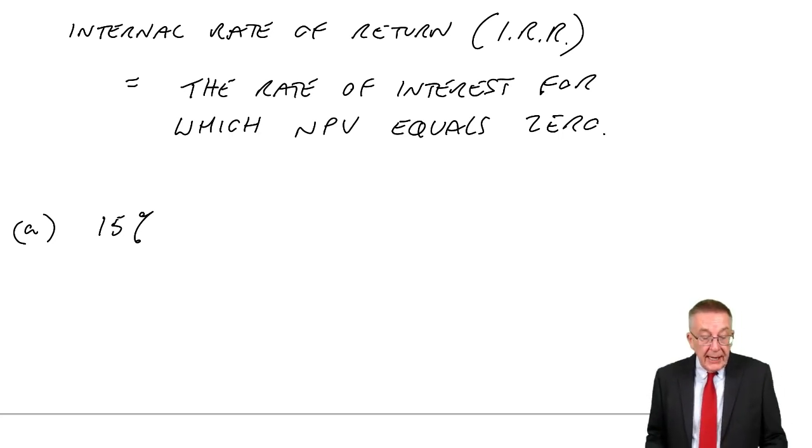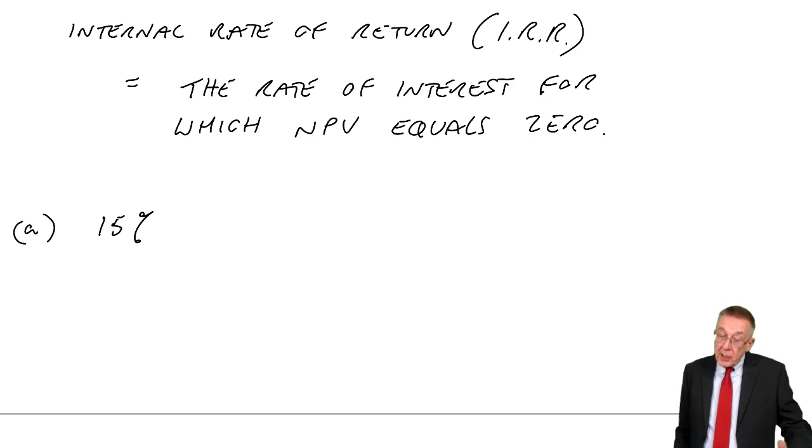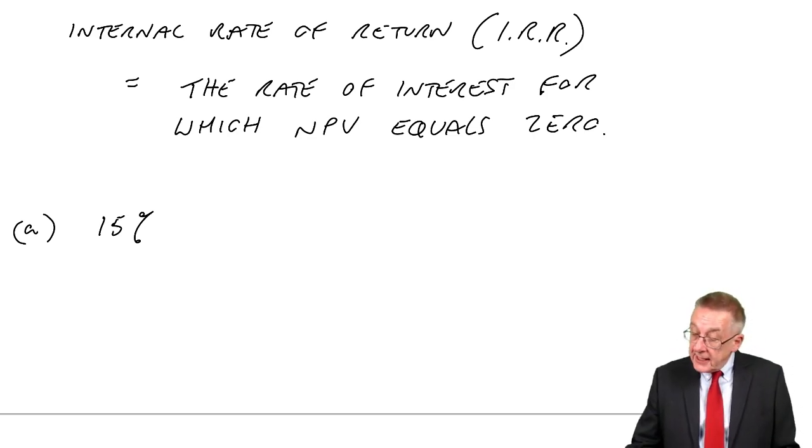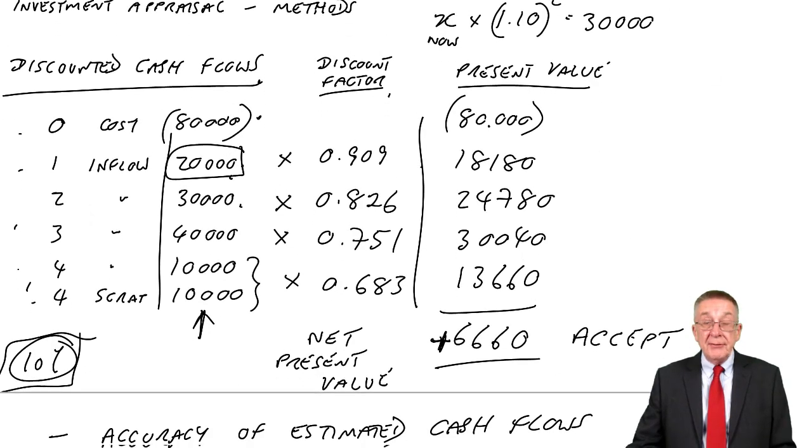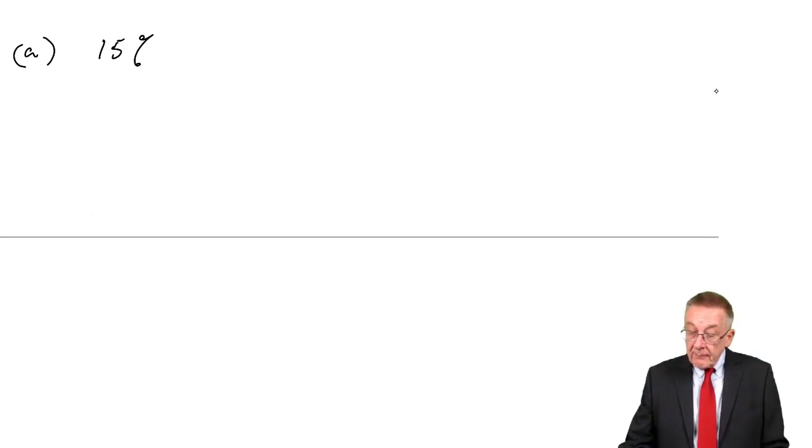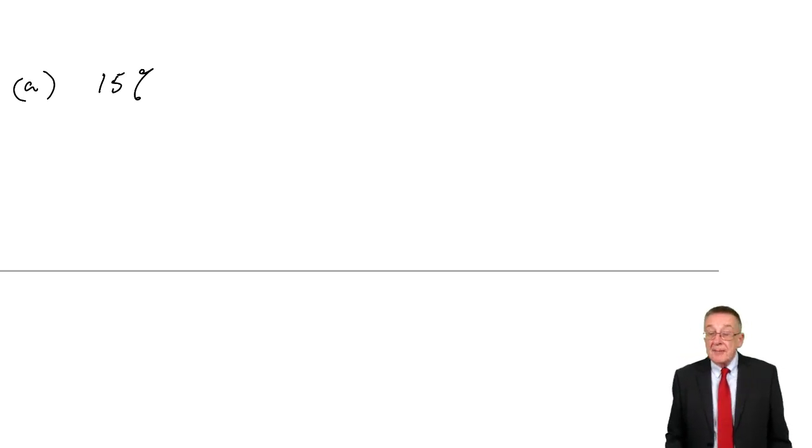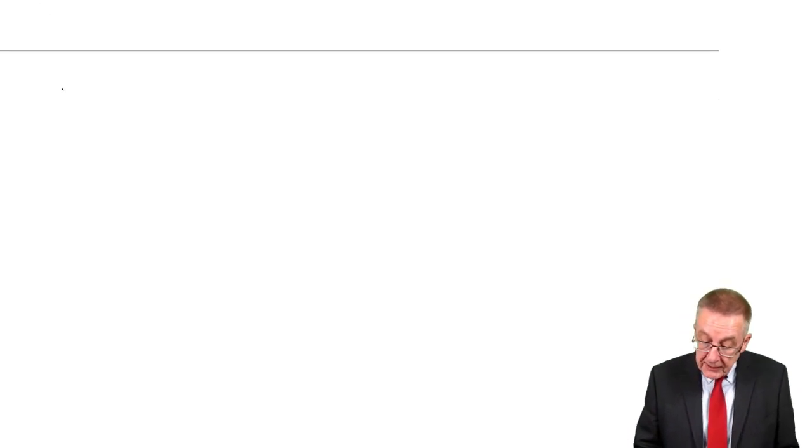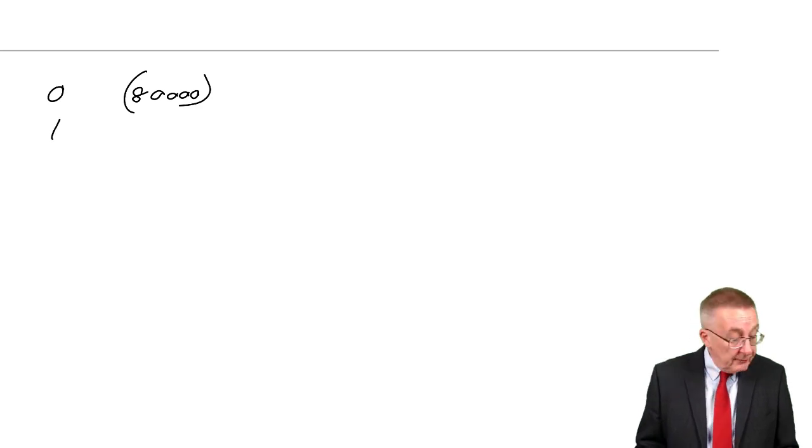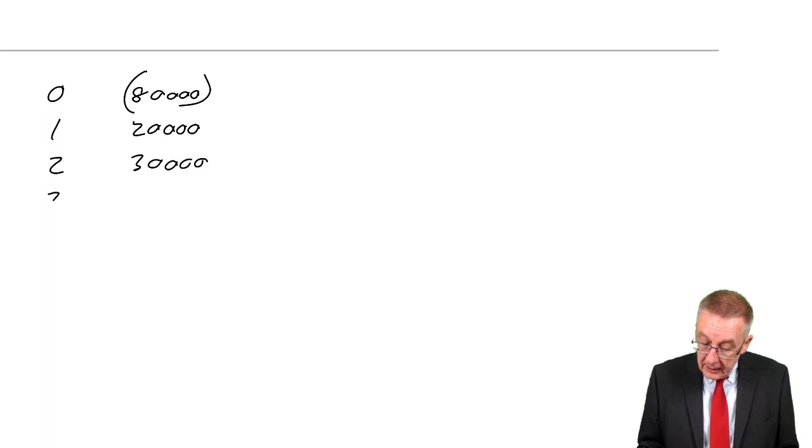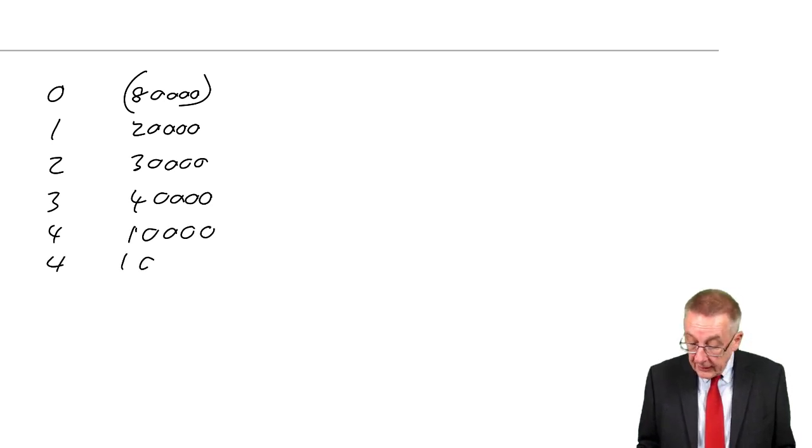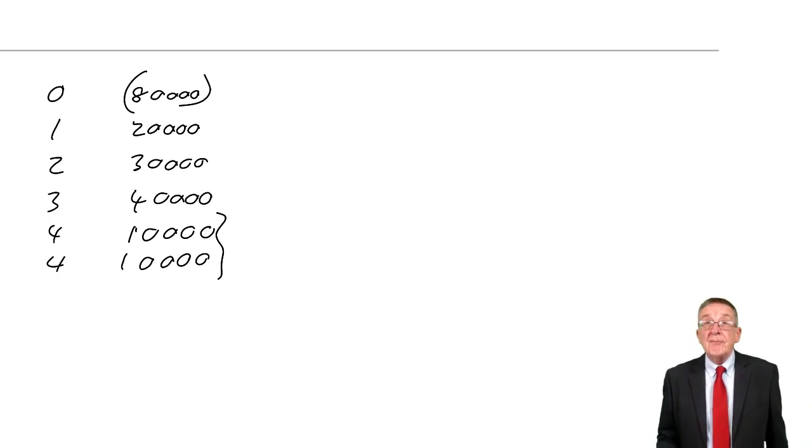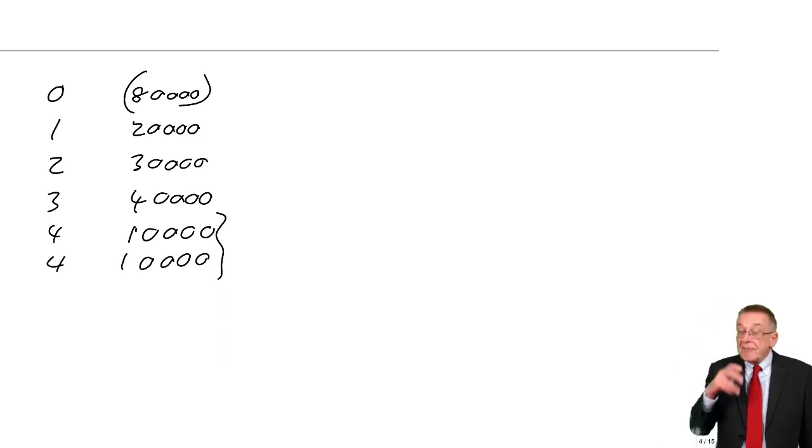We want an internal rate of return, but before I explain how we get it, part A of example 3 asked us to calculate the NPV of the project at 15%. We'd done it at 10%, it was positive, we accept. We've now met guests at 15%.